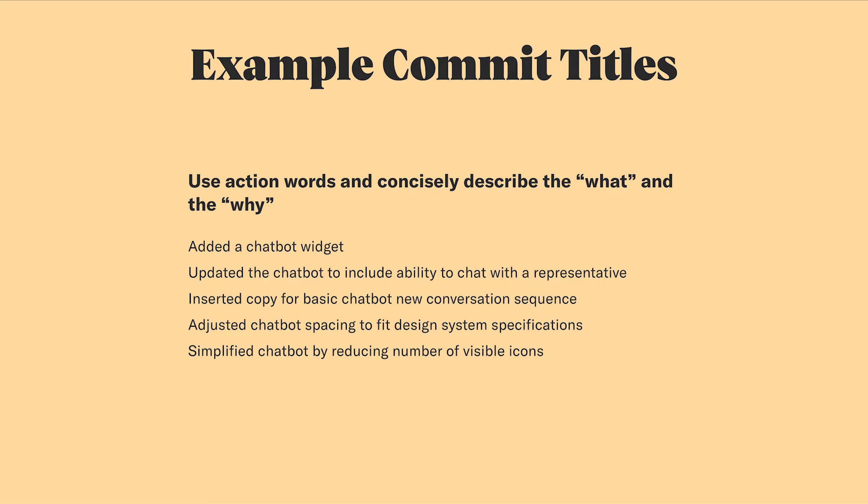Here are a few examples of good commit titles. Each one tells the viewer what feature or functionality was added during this stage of the design process. You can also see that some of these are complex, so it might have taken a few hours or even a few days to complete, whereas others are pretty small and might have only taken a few minutes.